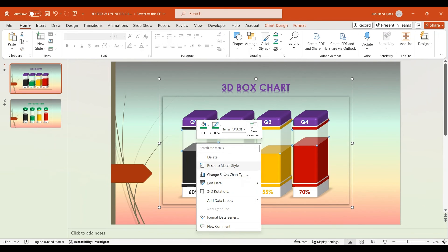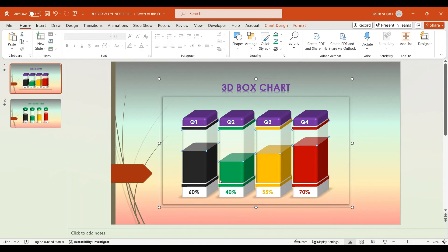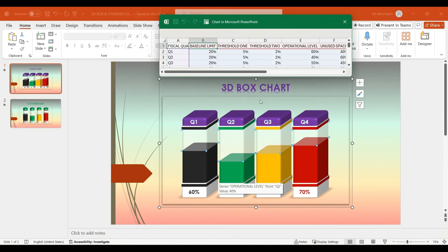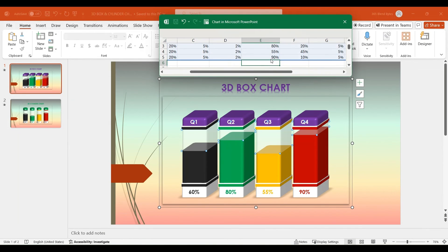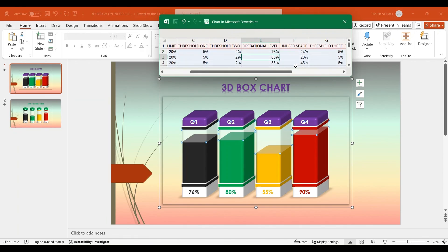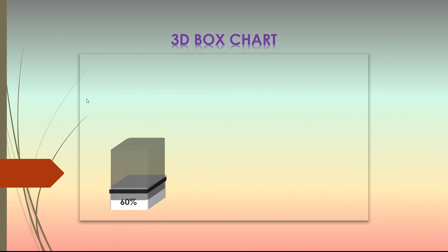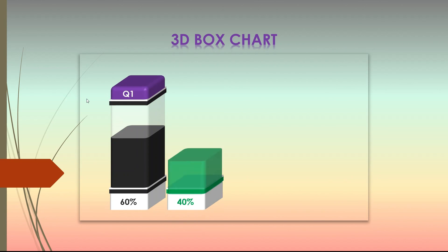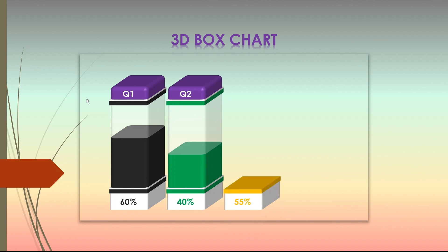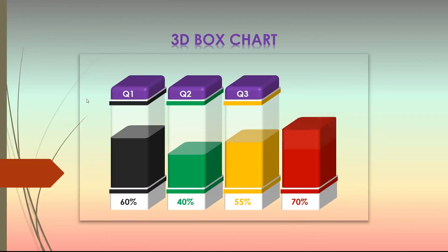In the final step, right-click on the column and select Edit Data. Once the Excel sheet appears, you can make any changes to the data as required, and these changes will reflect instantly in the presentation. Now let's view the presentation in full screen to see it in its entirety. This is how you create a compelling and professional presentation, captivating your audience with engaging visuals and dynamic content.